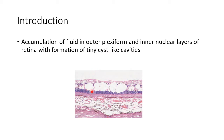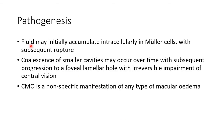This picture shows histopathology of CMO. Coming to the pathogenesis of CMO, fluid may initially accumulate intracellularly in Muller cells with subsequent rupture. Coalescence of smaller cavities may occur over time with subsequent progression to a foveal lamellar hole with irreversible impairment of central vision.